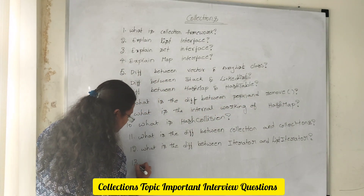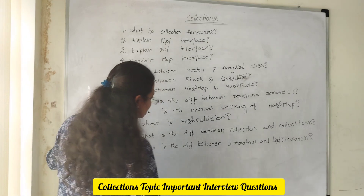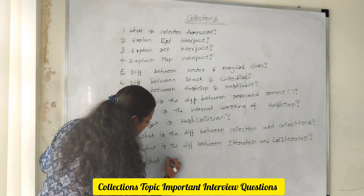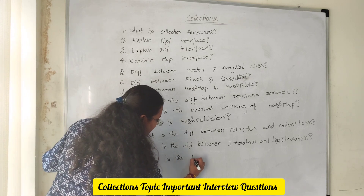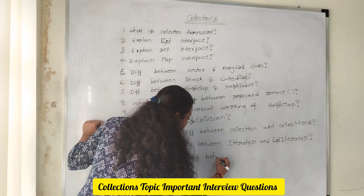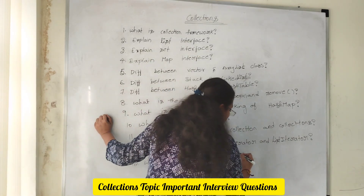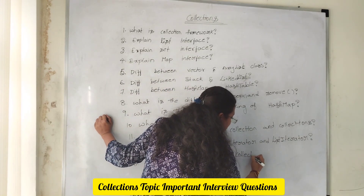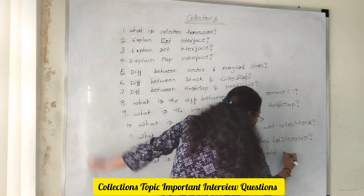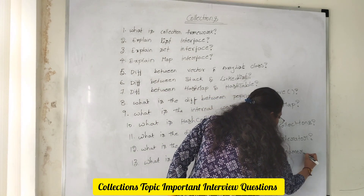The 13th question is: what is the difference between Collection and Enumeration?